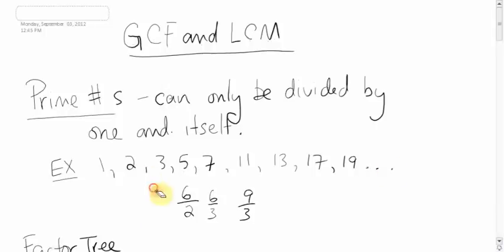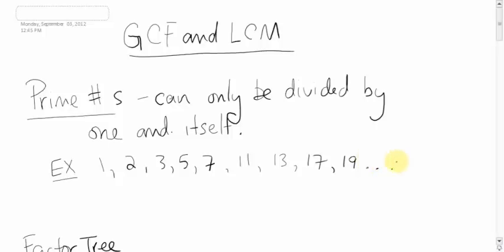The next prime number after 19 — what do you think that would be? Well, it can't be 20. Actually, any even number after 2 cannot be prime because 2 can go into any even number. It's not 21 either because 21 can be divided by 7 and 3. 22 is even, so that won't work. 23 would be the next prime number.